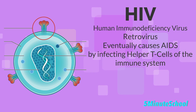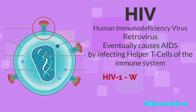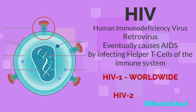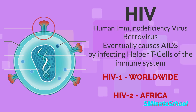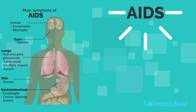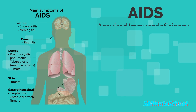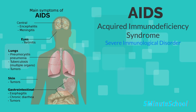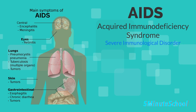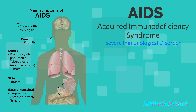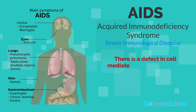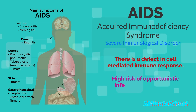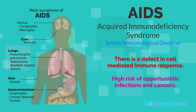There are two common serotypes of HIV. You have HIV-1, which has worldwide distribution, and HIV-2, which is primarily confined to Africa. HIV eventually progresses into Acquired Immunodeficiency Syndrome, commonly referred to as AIDS. AIDS is a severe immunological disorder and results in a defect in cell-mediated immune response, with greater susceptibility to opportunistic infections and certain cancers.